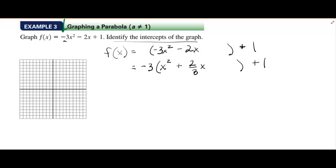That says 2 thirds. If you were to distribute this in, negative 3 times x squared is negative 3x squared. Negative 3 times 2 thirds x, that's negative 2. So it works. So your negative 3 is out there in front. That's your A. That's what's going to tell you there's a stretch and that it's upside down.